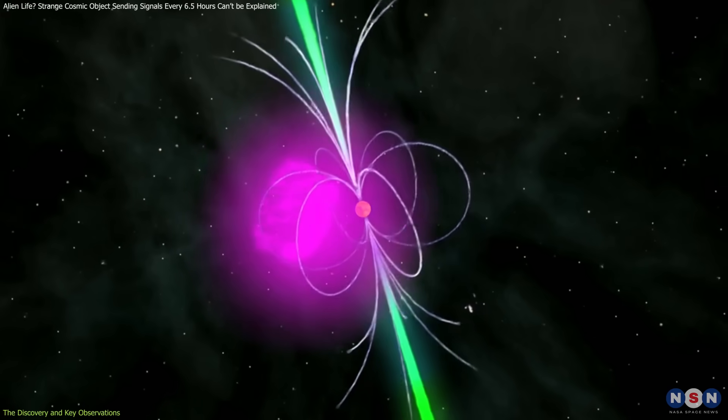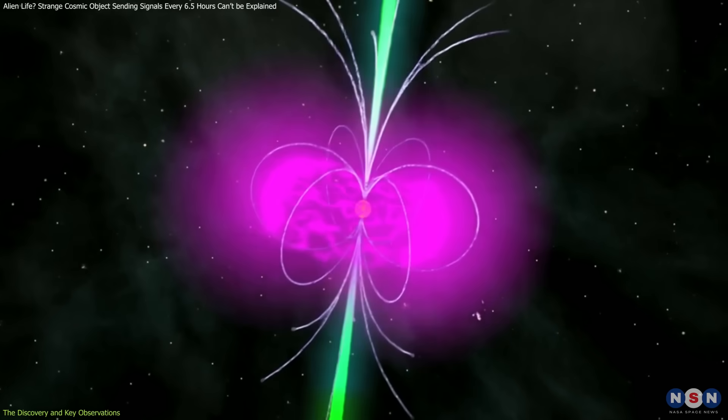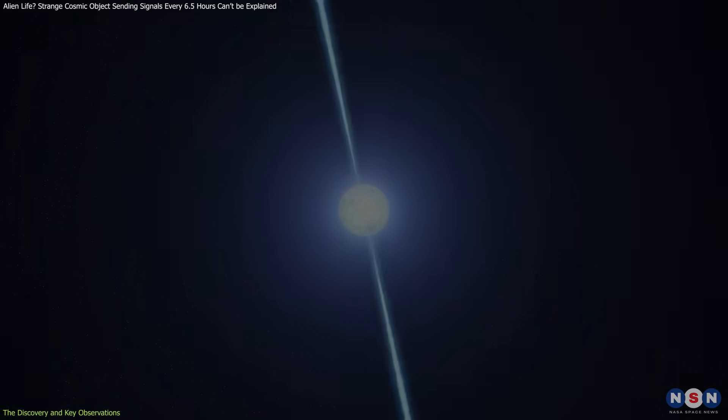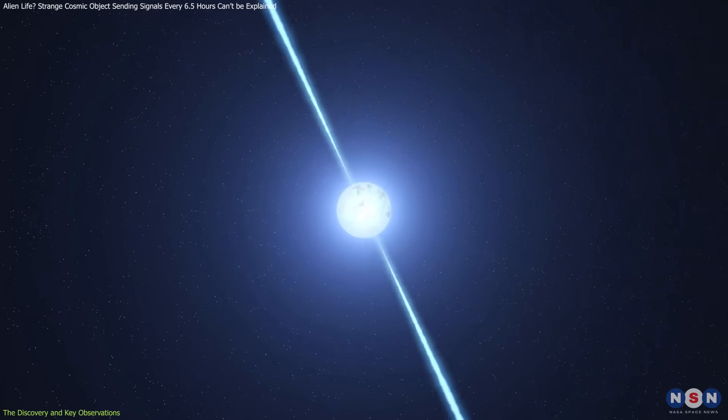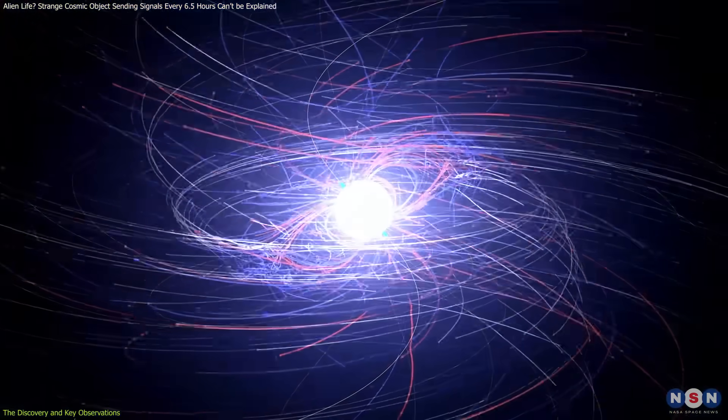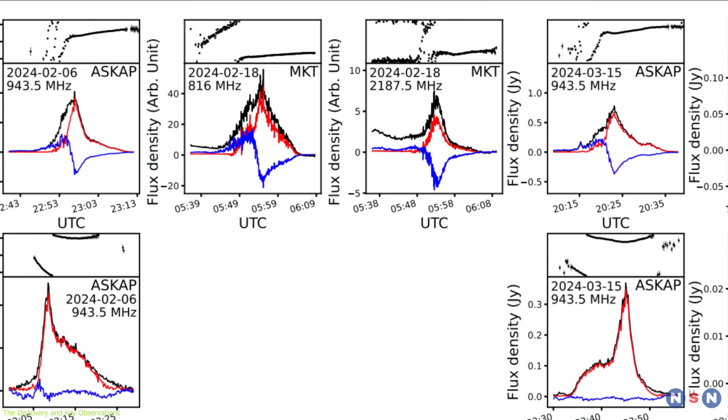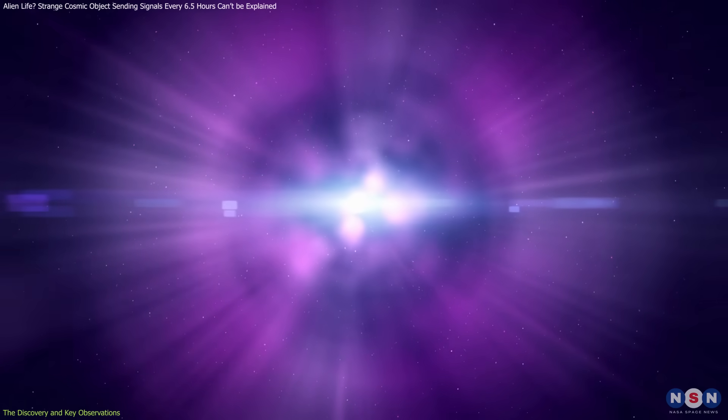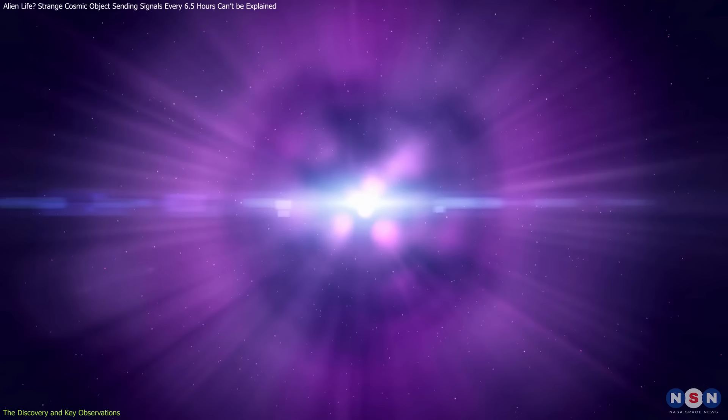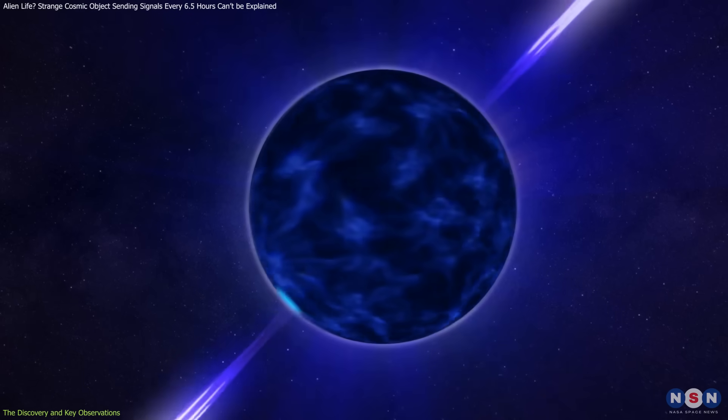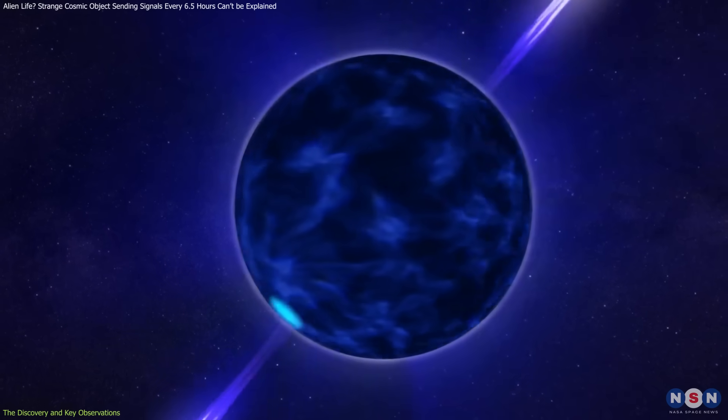This suggests the object emits radio waves from both its magnetic poles, a feature typically seen in pulsars whose magnetic axes are nearly perpendicular to their rotational axes. The presence of interpulses suggests that the object's magnetic field geometry is highly unusual, possibly different from anything seen before in neutron stars.